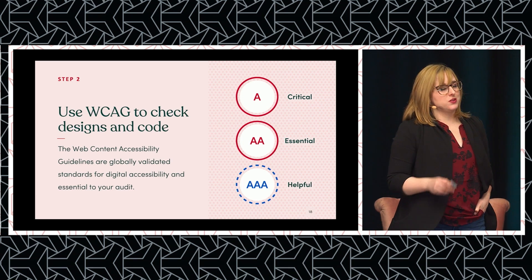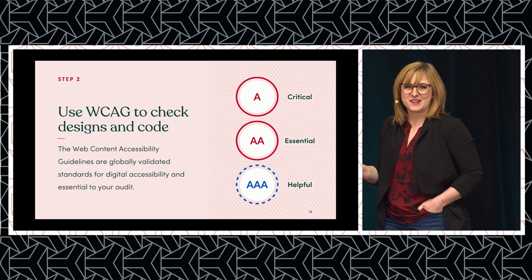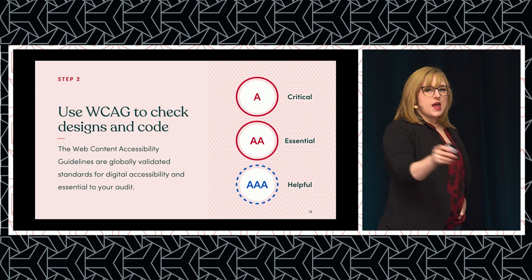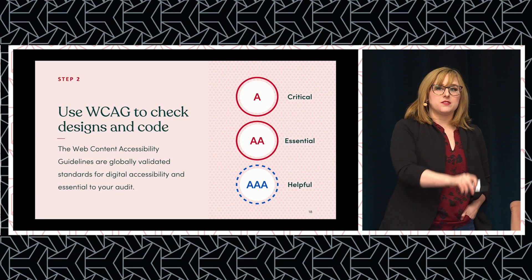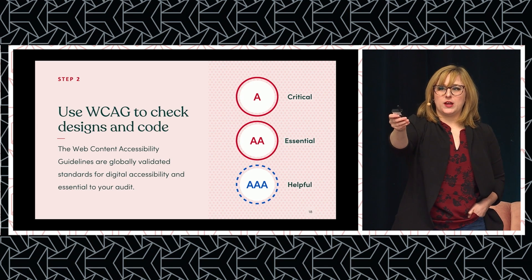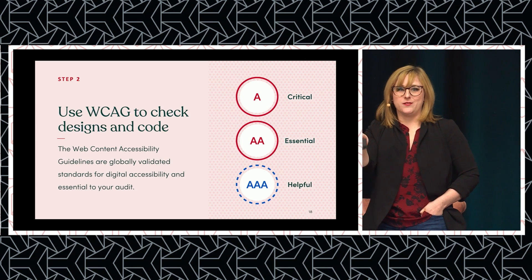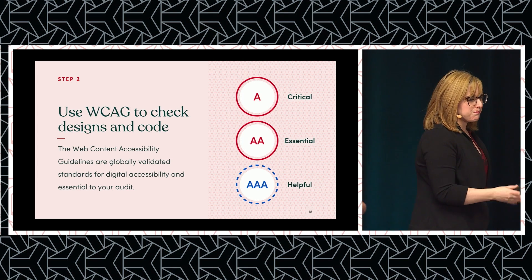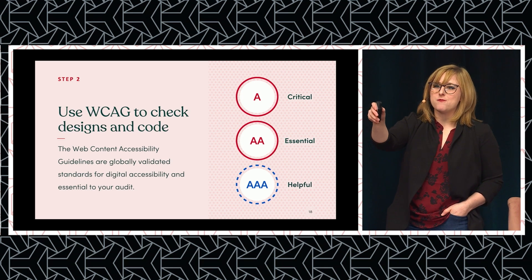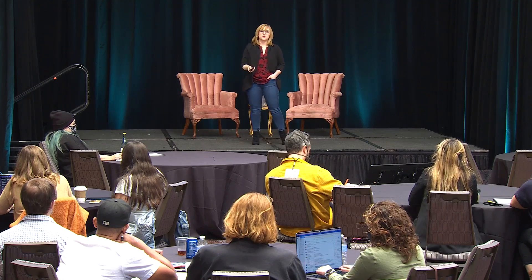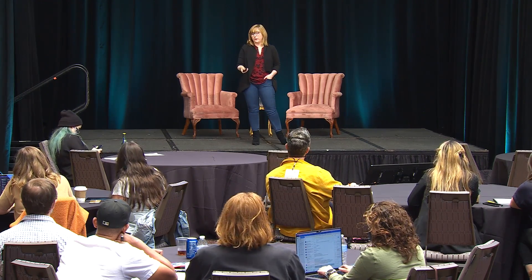If you look at WCAG, the first thing you'll notice is that's a lot of text. Every WCAG guideline has an A rating system — we go from A to AA to AAA. In most cases, you're going to want to review everything in your system as WCAG outlines it in the A and AA guidelines. AAA is helpful, especially for things like content and readability, but when you're doing an audit, focus on A and AA.